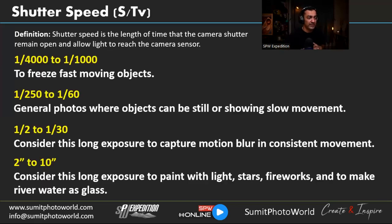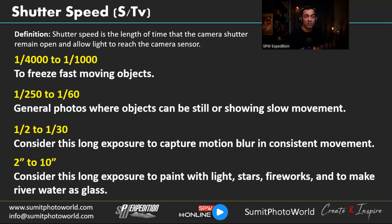Shutter speed is the length of time the camera shutter remains open and allows light to reach the sensor — photographers often call this 'exposure time.' Shutter speed ranges from 1/4000 to 1/2000 for very fast speeds (some professional devices support 1/8000) to freeze fast-moving objects. Speeds of 1/250 to 1/60 are good for general photos — even a slowly walking person can be captured at 1/250.